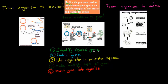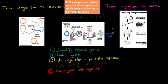Let's say we want to make insulin and put that into bacteria. So we put a human insulin gene into bacteria, and the bacteria will make us insulin. But the first thing we have to do is find where that human insulin gene is — that's the first part.